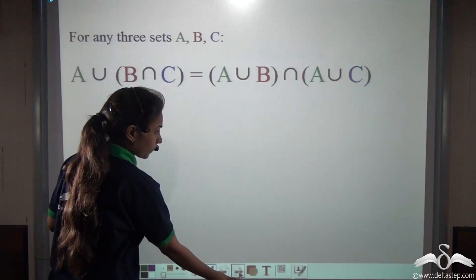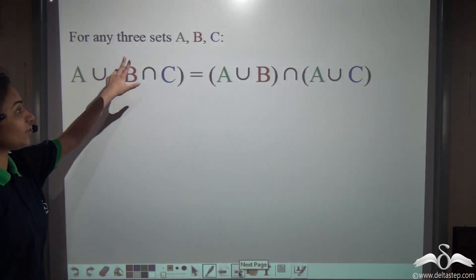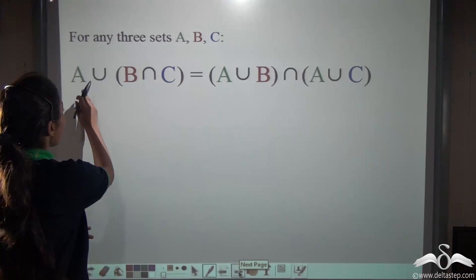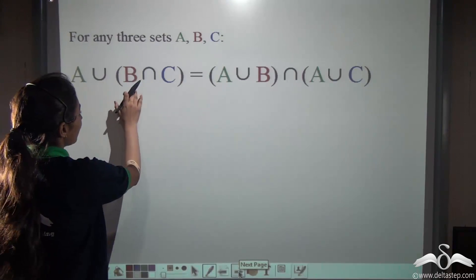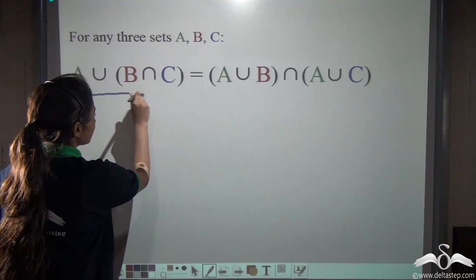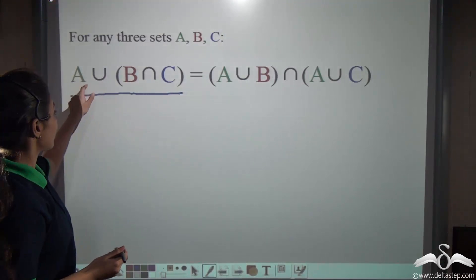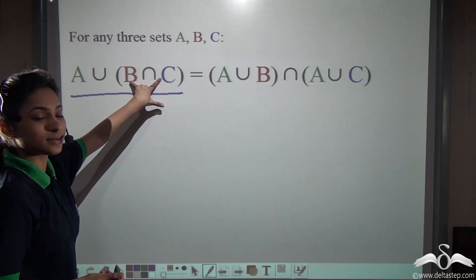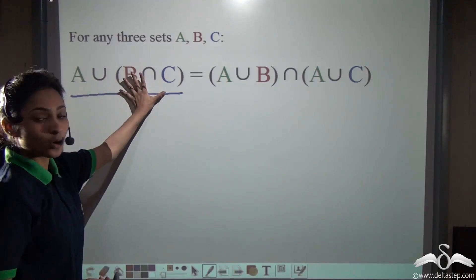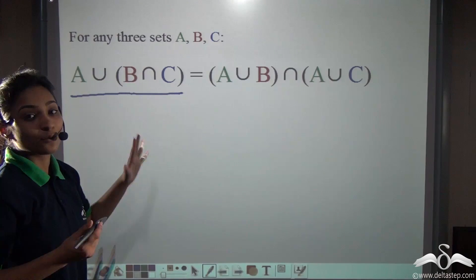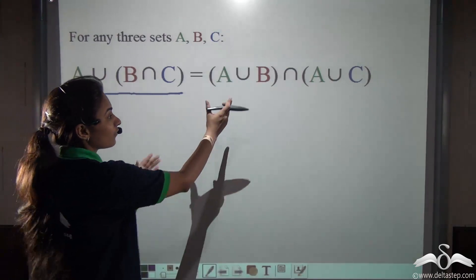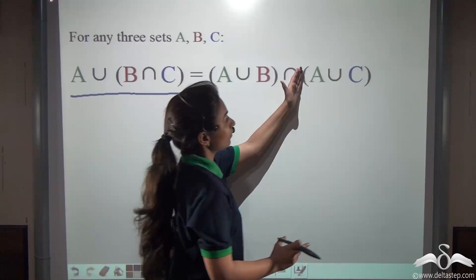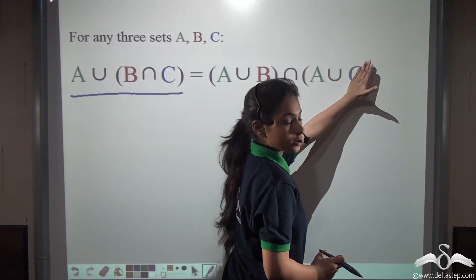For any three sets A, B and C, there is a relation: A union (B intersection C). This is what we want — the set of wicket keepers union with people who are both batsmen and bowlers. And what do we have right now? We have a team of wicket keepers and batsmen, that is A union B, and a team of wicket keepers and bowlers, that is A union C.